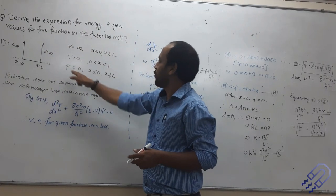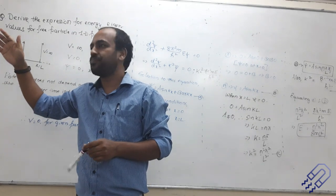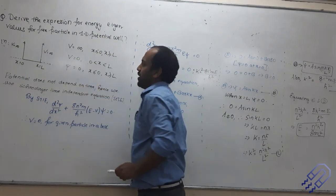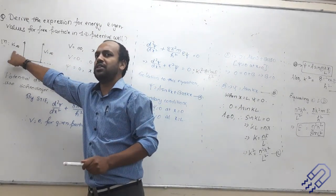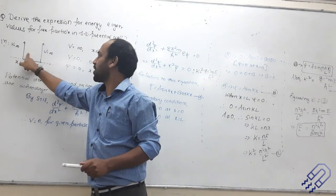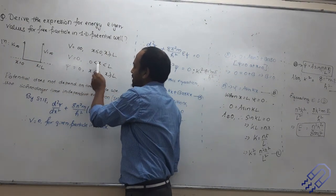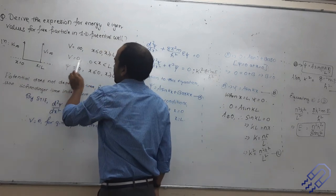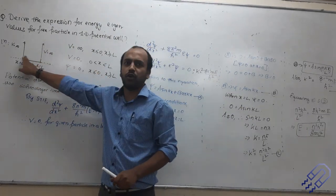Now for the example question, we have the expression for energy eigenvalues. Consider the following condition: V equals infinity on both sides of the box. What does it mean? The particle cannot escape — it is trapped within this box. V equals zero inside, that means between 0 and L. If x lies between 0 and L — between this point and this point — the potential is zero. That means it can freely move. This is the mathematical way of saying it is a free particle within this box.